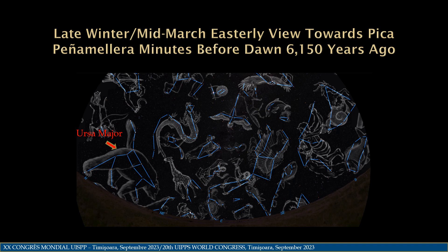We can see the same astronomical view of Pica Peñamellera half a precession cycle closer to our time. The full figure of the she-bear walks along the horizon line but doesn't drop below it. This would not be an astronomical representation of our Pica Peñamellera view as depicted on a wall in the Las Monedas Cave.